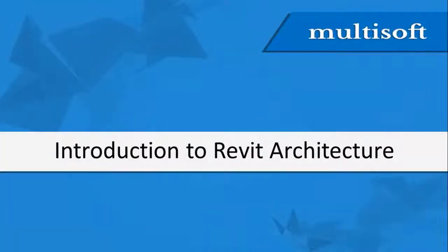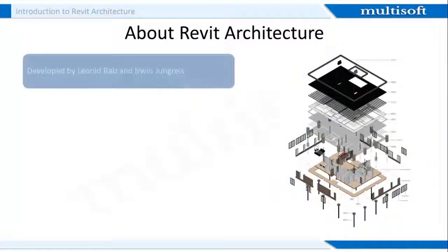Let's begin with an introduction to Revit Architecture. Revit was developed on the Microsoft Windows platform. It allows architects and other building professionals to create building models by constructing a parametric three-dimensional model that includes both geometric and non-geometric design and construction information. This was later on known as building information modeling.